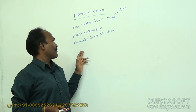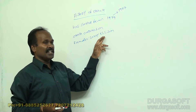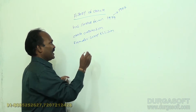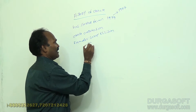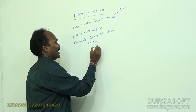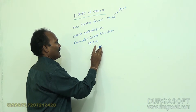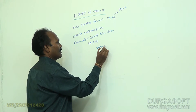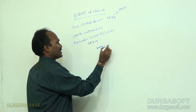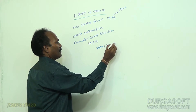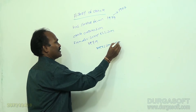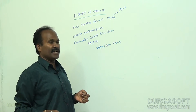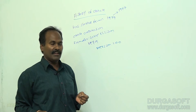The founder of Oracle Corporation was Larry Ellison. In the year 1979, Oracle version 1.0 was released. This version was released at that time.